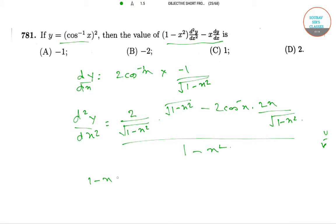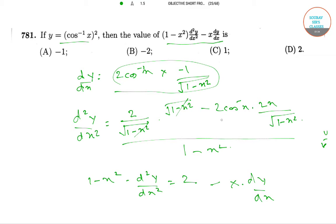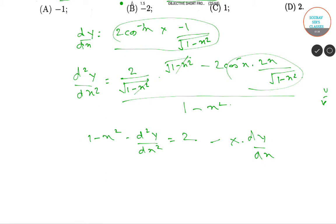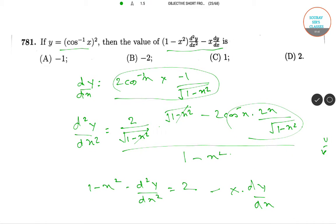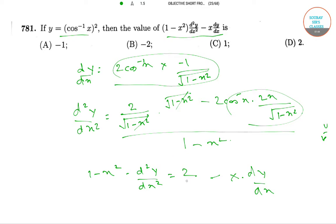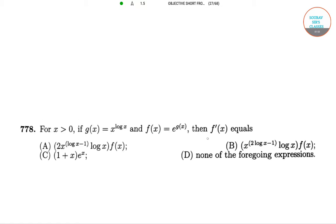From this we will get (1 minus x²)·d²y/dx² equals 2, as these cancel out, minus x·dy/dx. So from the question, (1 minus x²)·d²y/dx² minus x·dy/dx is equal to 2. So the correct answer is option number D.